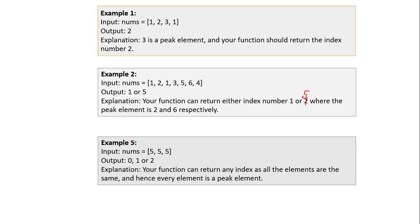In the next example, the array consists of integers that are all the same. In this case, you can return any index since all the elements are equal, so every element can be considered a peak element — you can return 0, 1, or 2. The largest element in an array will also be the peak element since it is definitely greater than all its neighbors.